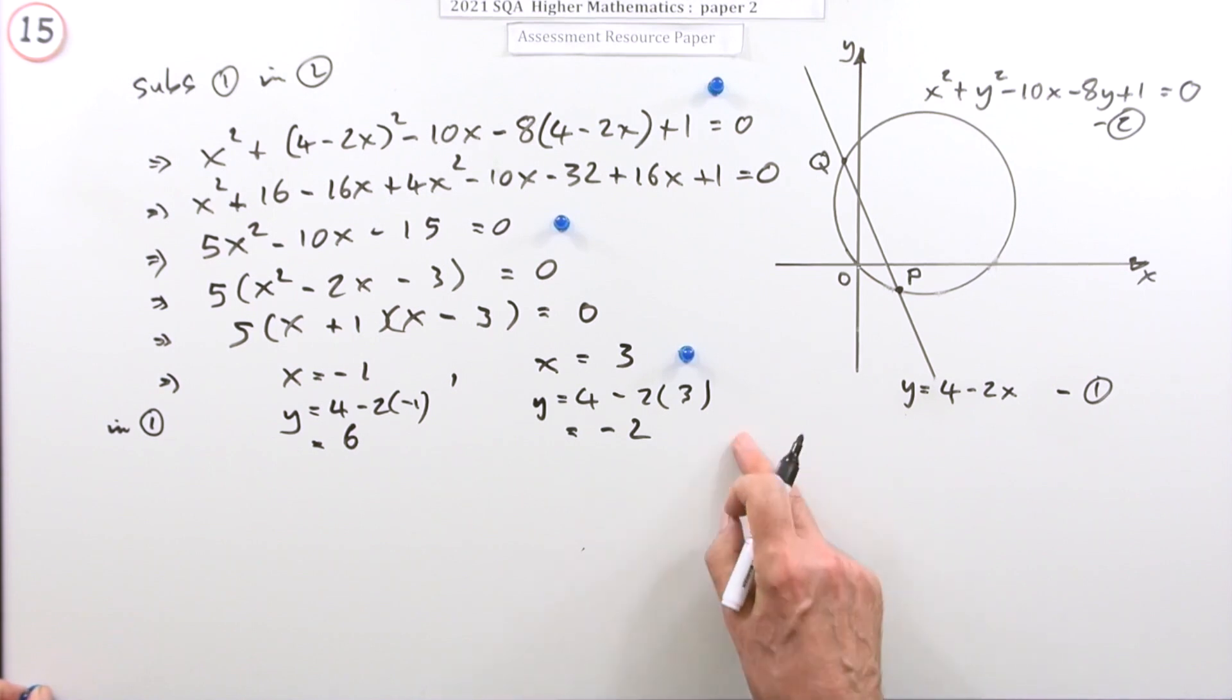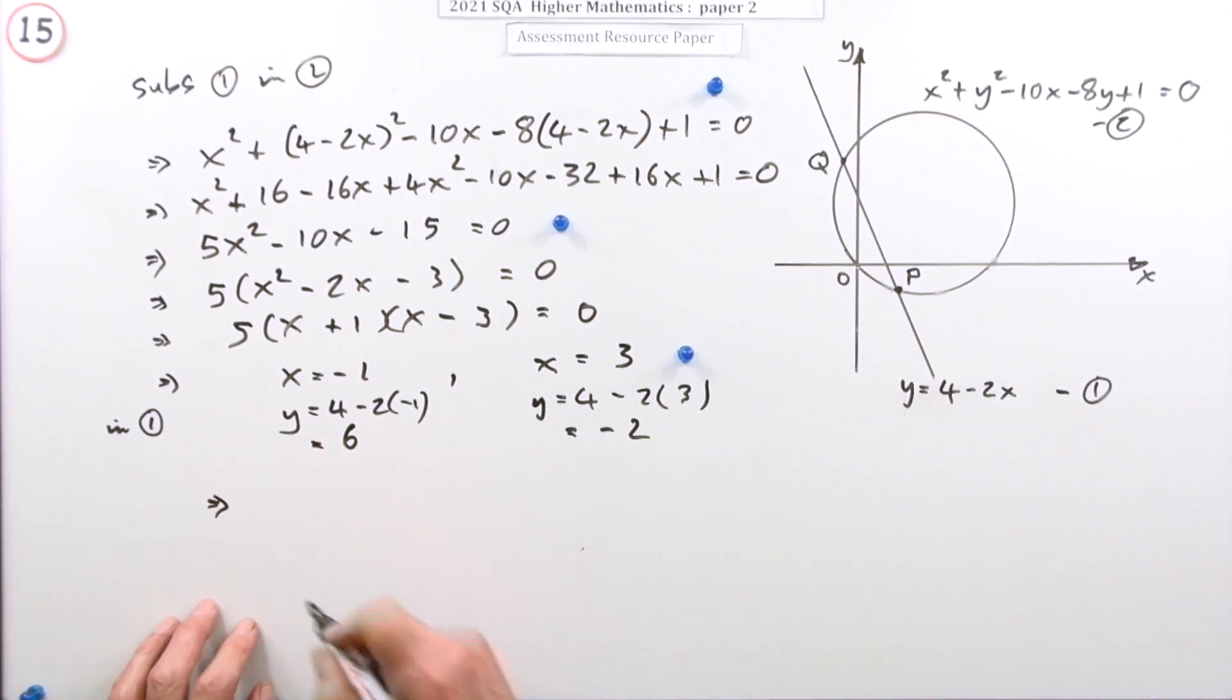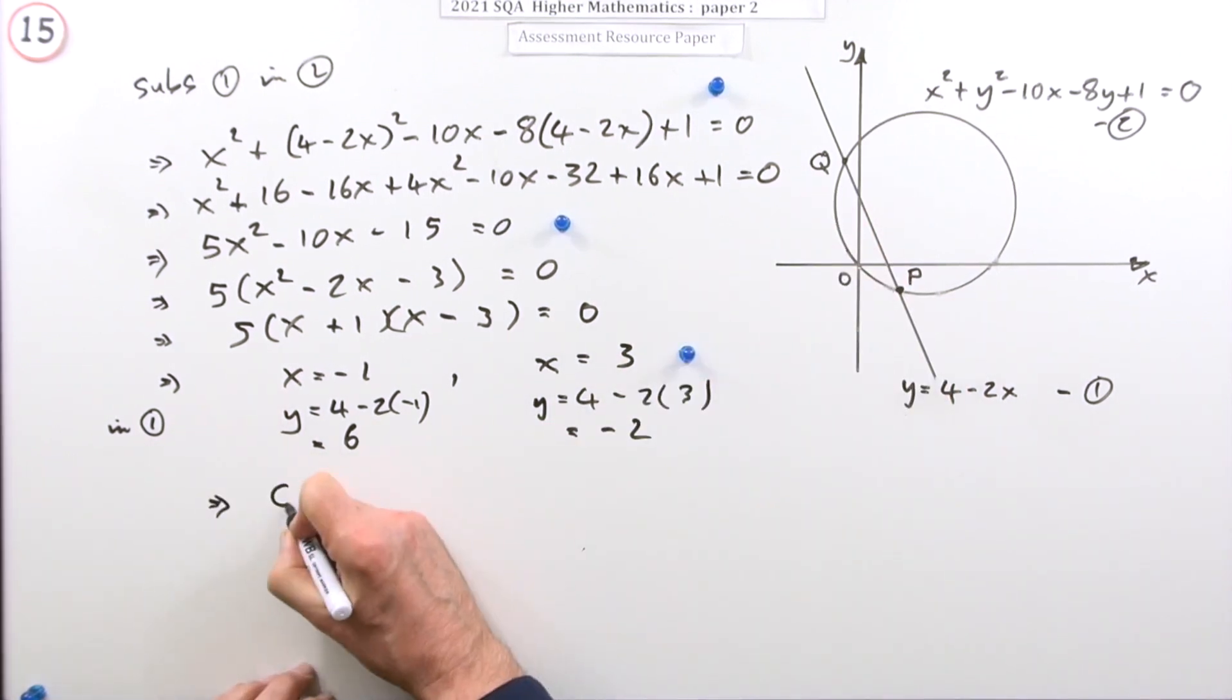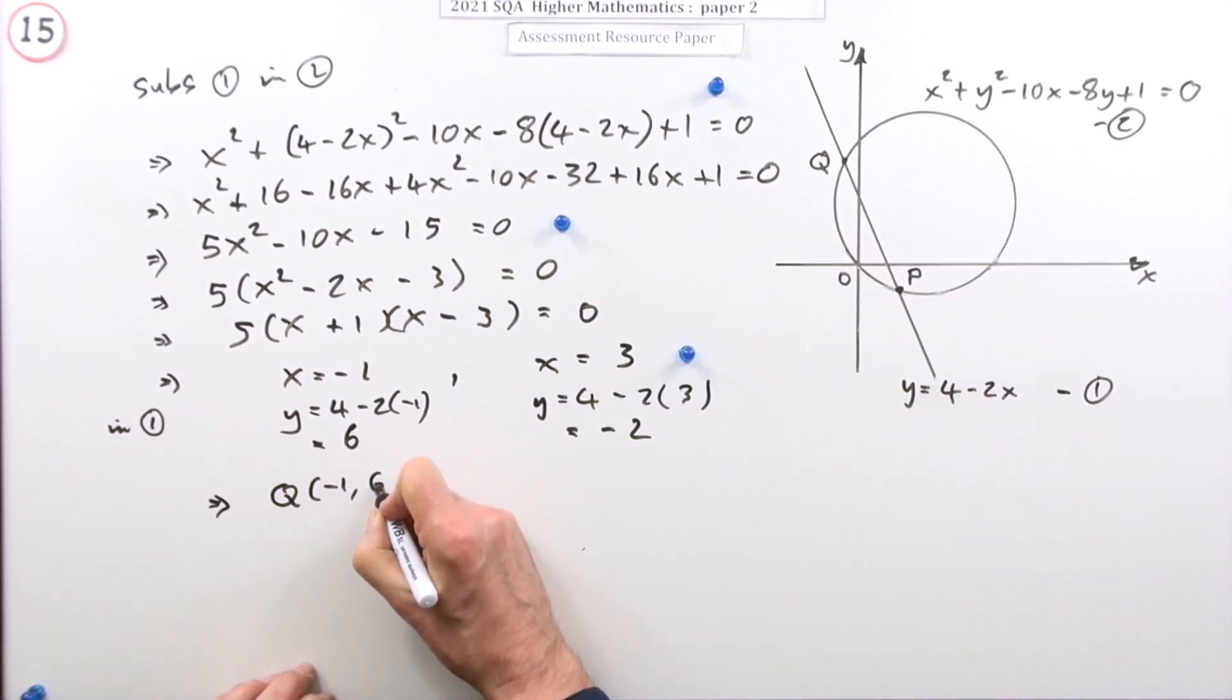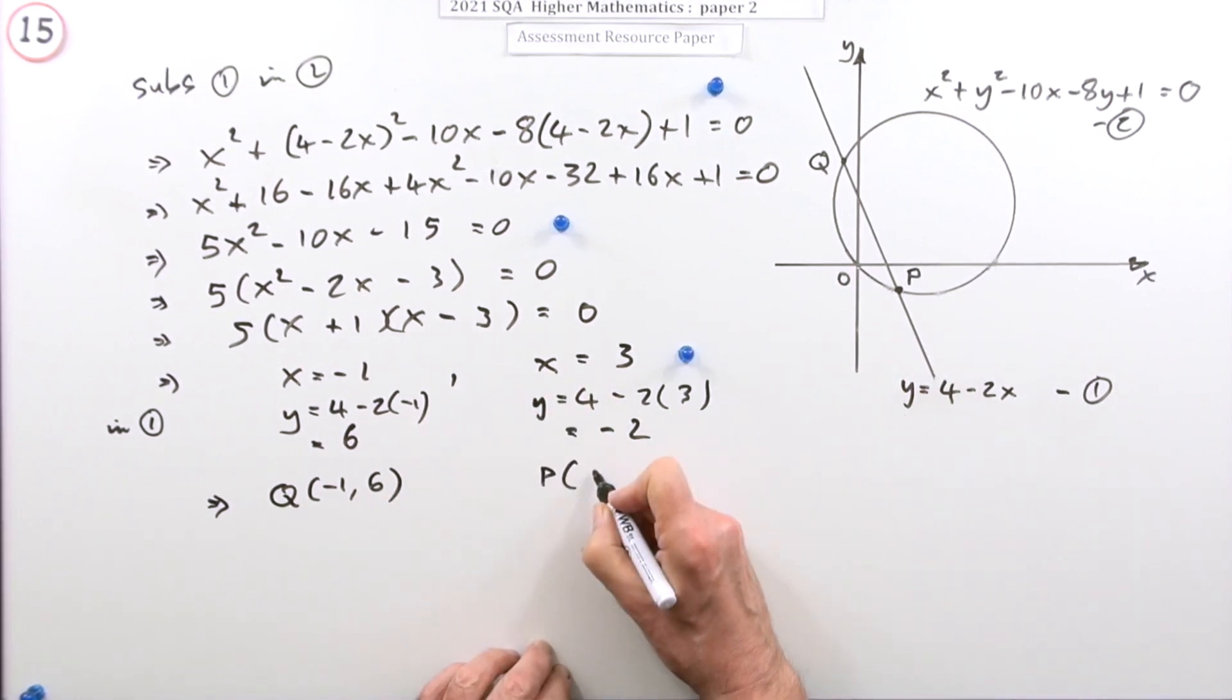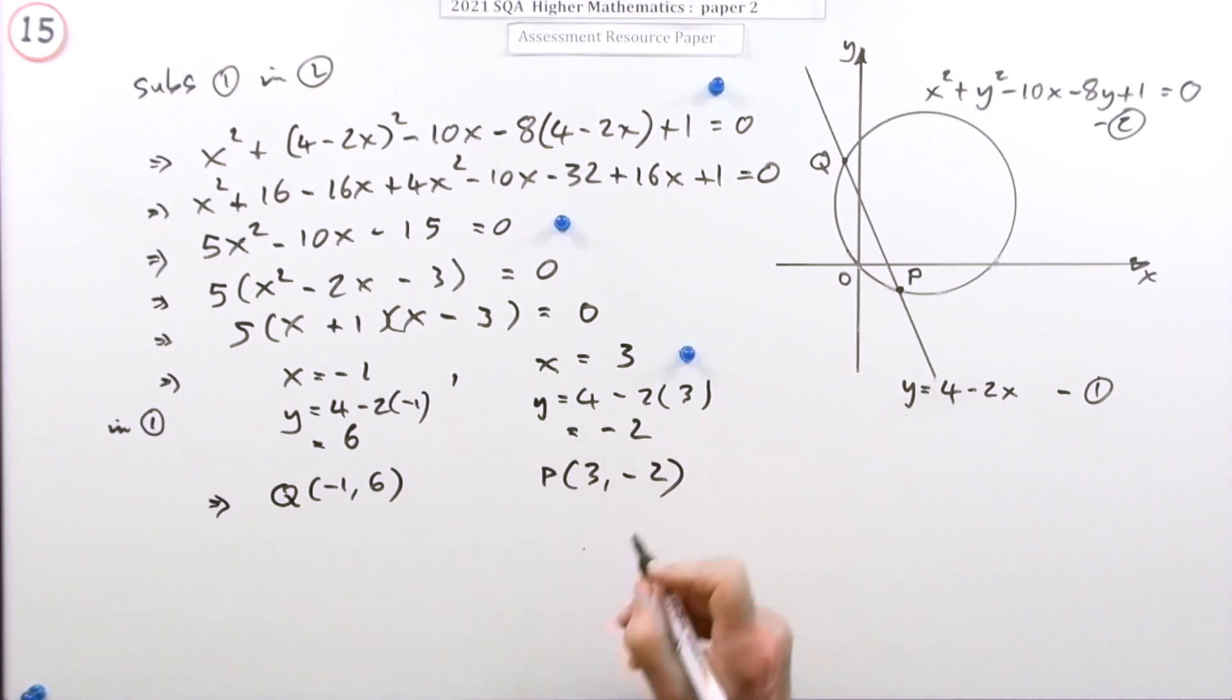Now here they've just given that the mark. But really you should be finishing it off by saying this. Well that must be the Q, so Q is the point negative 1, 6. And that must be with 3 the P, so P is the point 3, negative 2. And that should be the mark.